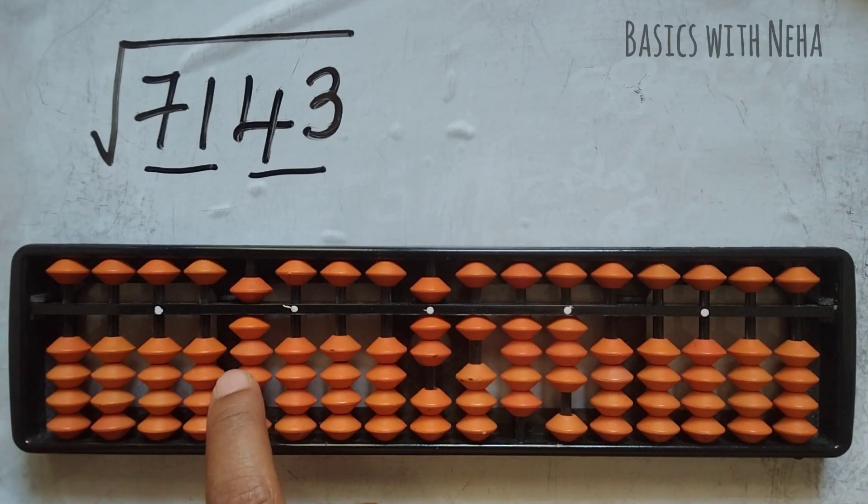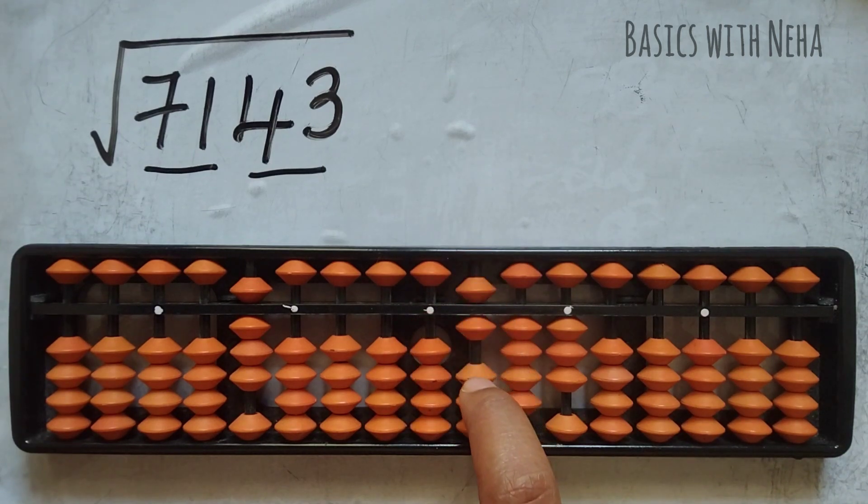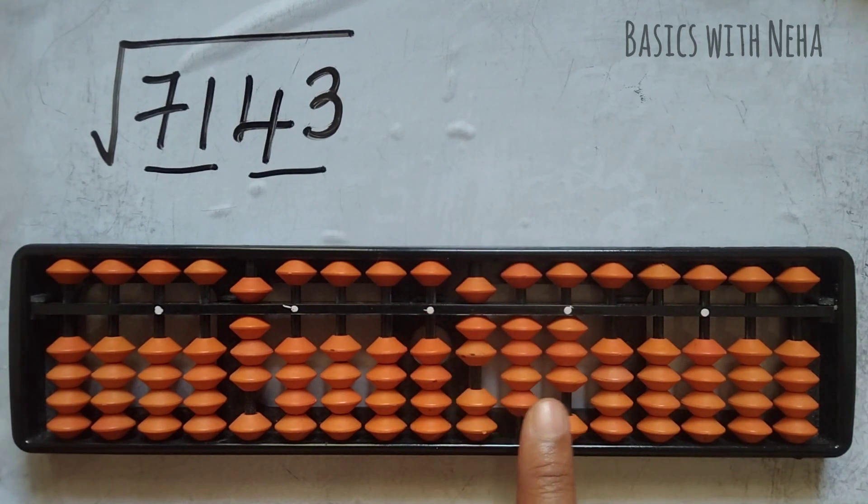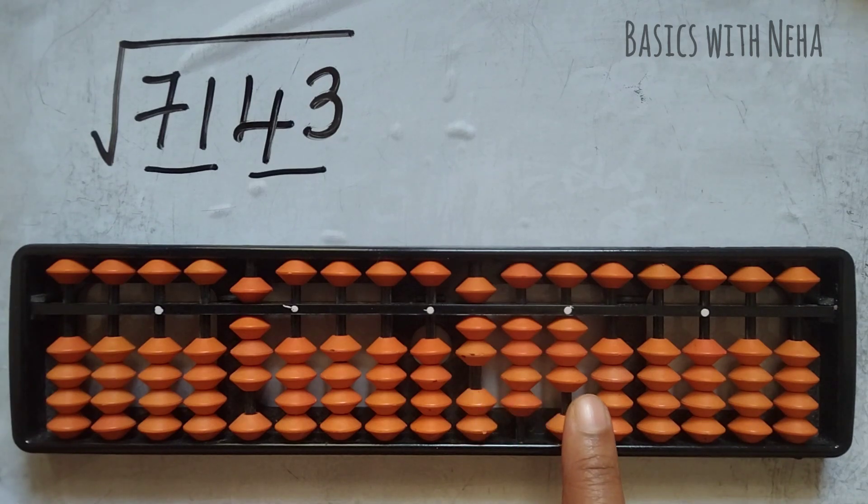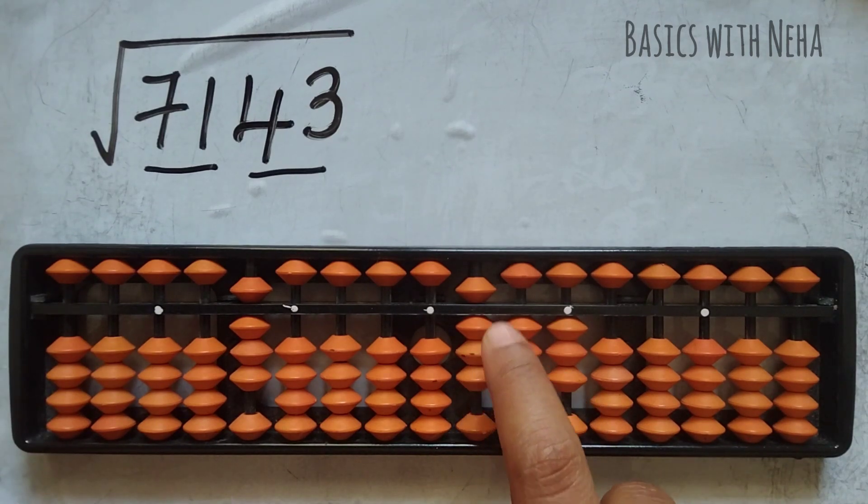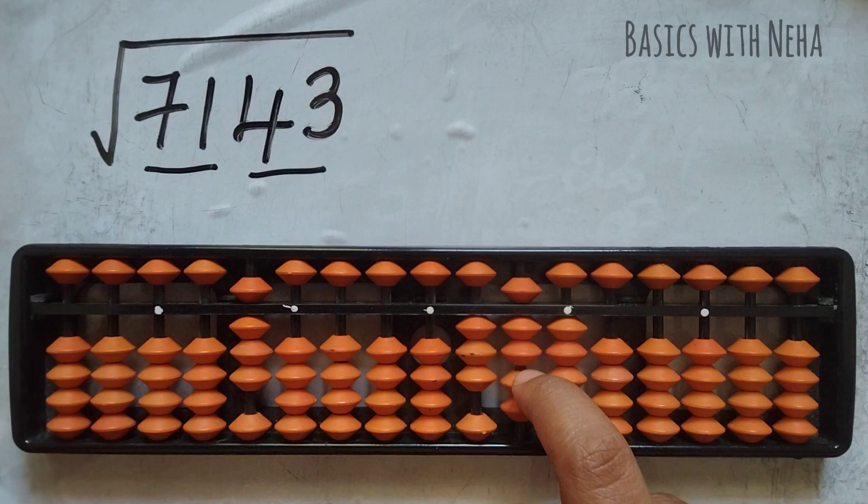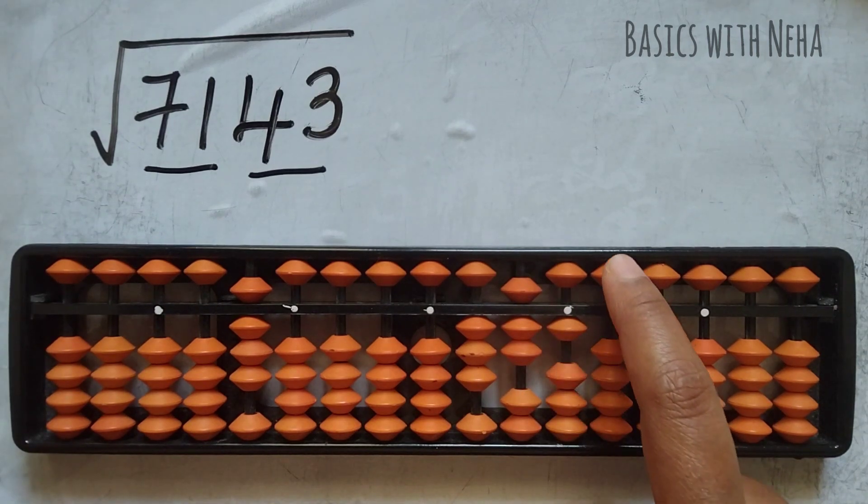So 8 eights are 64. I'll minus 6 and minus 4. Now I have the number 7, 4, and 3. I have to divide this number by 2. 2 threes are 6, 2 sevens are 14, 2 ones are 2.5.